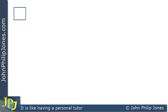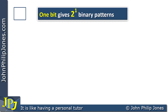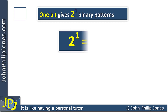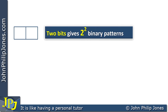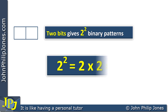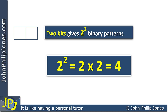If we consider one flip-flop, which is clearly capable of storing one bit — a zero or a one — then one bit gives two to the one binary patterns. Two to the one, as we know from mathematics, is two. Carrying on, when we have two flip-flops, something capable of storing two bits, we have two to the two binary patterns. Two to the two is two times two, which equals four, so two bits gives us four binary patterns.